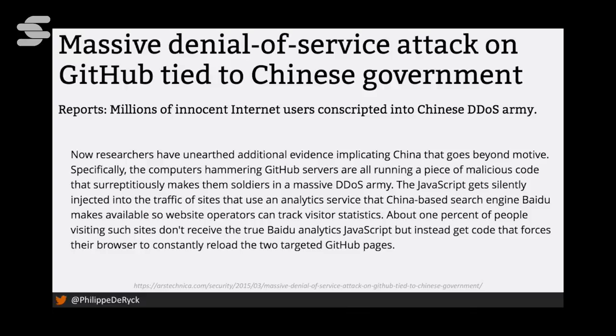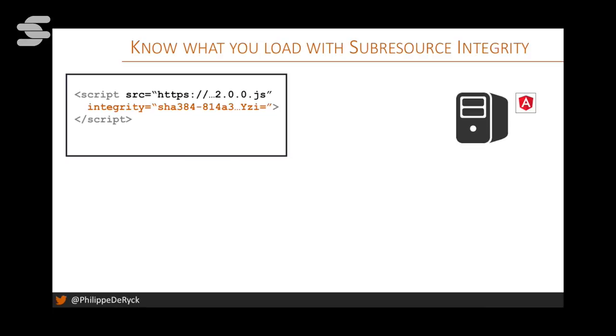In 2015, China launched an attack against GitHub by changing analytics code from Baidu — instructing the code to make requests to GitHub, served to millions of Chinese users. This was essentially a by-design botnet. The important point is: this is a real problem, and there's a solution called sub-resource integrity (SRI). With SRI you can assure you know what you're loading and protect yourself against this kind of attack. You specify an 'integrity' attribute on the script tag, and the browser verifies the checksum of the loaded library against your specified value.